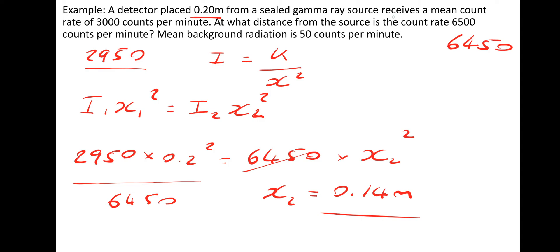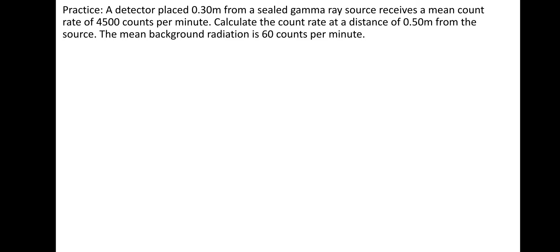There's another practice question. If you want to redo the previous one, feel free to rewind. For the practice question: a detector placed 0.3 metres from a sealed gamma ray source receives a mean count rate of 4,500 counts per minute. Calculate the count rate at a distance of 0.5 metres from the source. The mean background radiation is 60 counts per minute. We need to subtract 60 from 4,500, giving us 4,440.